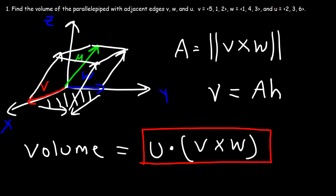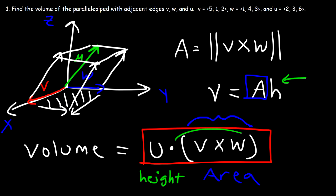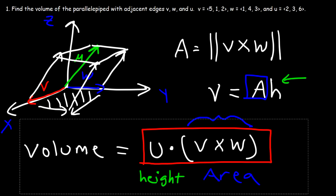If you look at this formula, the cross product of V and W tells us the area — basically the area of the base. And vector U corresponds to the height of the parallelepiped. So when you multiply area by height, it gives you the volume. That's just the way I think of the equation; seeing it that way makes sense to me, and hopefully it makes sense to you as well.